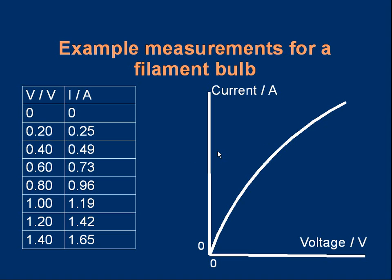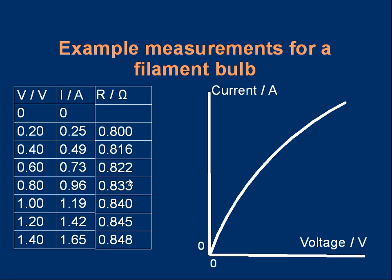What about the resistance of the bulb? I can work out the resistance for each pair of values. For example, 0.2 volts divided by 0.25 amps gives a resistance value, and repeating that process — for instance, 1.4 volts divided by 1.65 amps gives 0.848 ohms. Looking down the resistance column, the resistance is gradually increasing as the voltage and current increase. That's typical of a filament bulb: the resistance gets bigger as the bulb gets hotter.